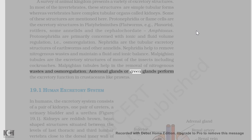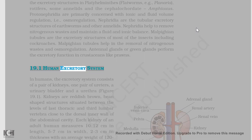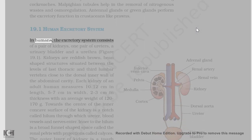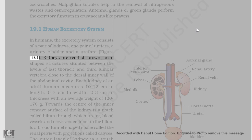Antennal glands or green glands perform the excretory function in crustaceans like prawns. In humans, the excretory system consists of a pair of kidneys, one pair of ureters, a urinary bladder and a urethra.